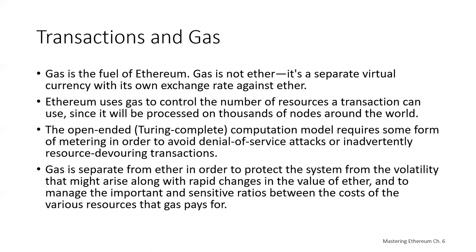Let's talk about transactions and gas. Gas is used to pay for running smart contracts on the Ethereum Virtual Machine, similar to how Bitcoin uses transaction fees for transaction processing. Gas is essentially the fuel that runs the Ethereum Virtual Machine — it's not really ether. We pay for gas in ether, but gas is a separate virtual currency with its own exchange rate against ether. Ethereum uses gas to control the amount of resources a transaction can use.